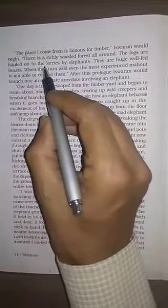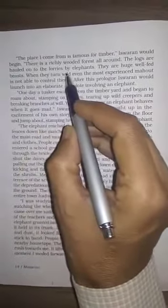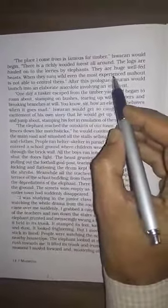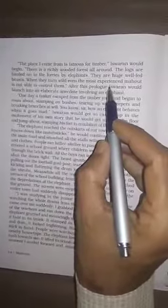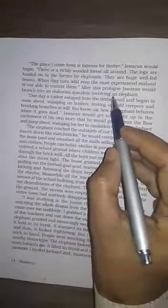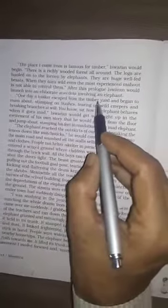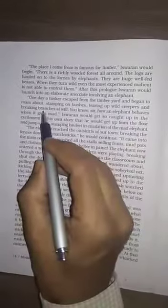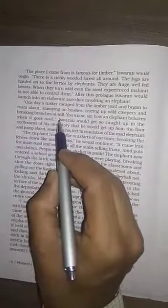The place I come from is famous for timber. Iswaran would begin. There is a richly wooded forest all around. The logs are hauled onto the lorries by elephants. They are huge well-fed beasts. When they turn wild even the most experienced mahout is not able to control them. After this prologue Iswaran would launch into an elaborate anecdote involving an elephant. One day a tusker escaped from the timber yard and began to roam about, stomping on bushes, tearing of wild creepers and breaking branches at will.